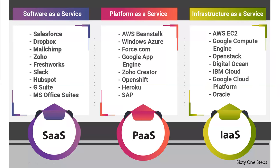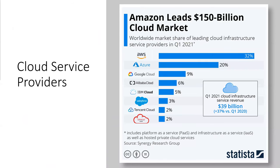Here are some examples of companies and products that are SaaS, PaaS, and IaaS. For example, Salesforce the product is SaaS, but Force.com is their PaaS offering. AWS Elastic Beanstalk is PaaS, while AWS EC2 is their IaaS offering. You'll probably recognize Slack and G Suite as SaaS, and MS Office Suite as well.